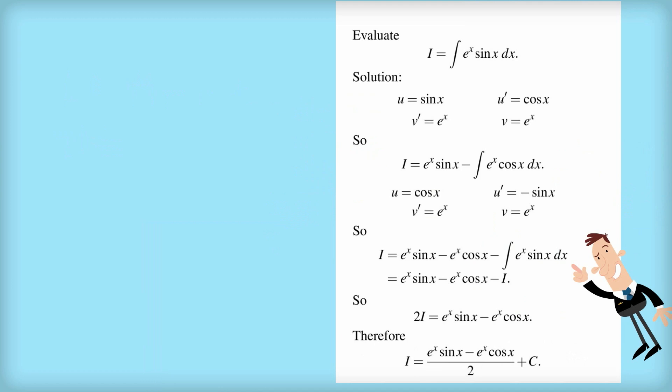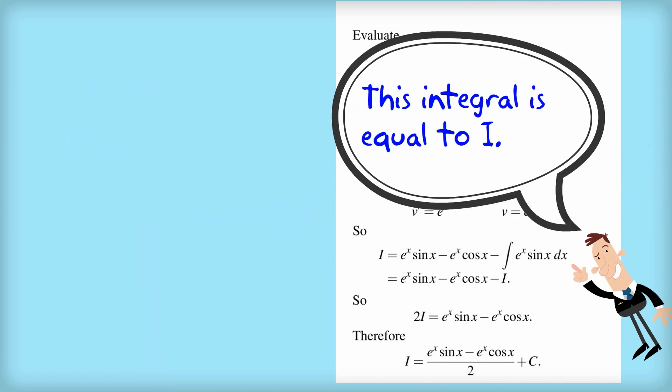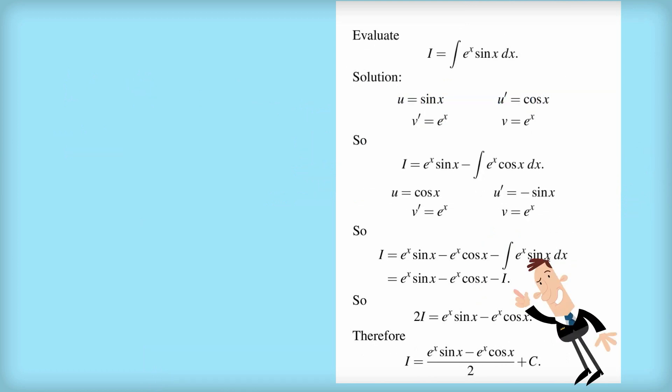And the flash of inspiration is to realize that this integral that we now have is in fact I itself. So we can replace the integral with negative I, and that enables us then to put all the I's to one side. So we get this expression for 2I, and if we know what 2I is, then obviously we can work out what I is. Add the constant C, and we get full marks.